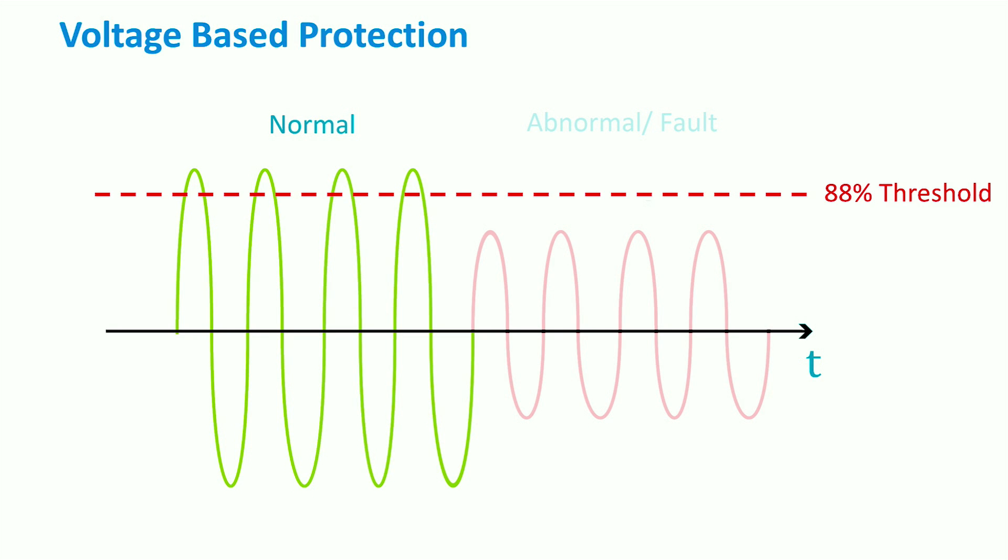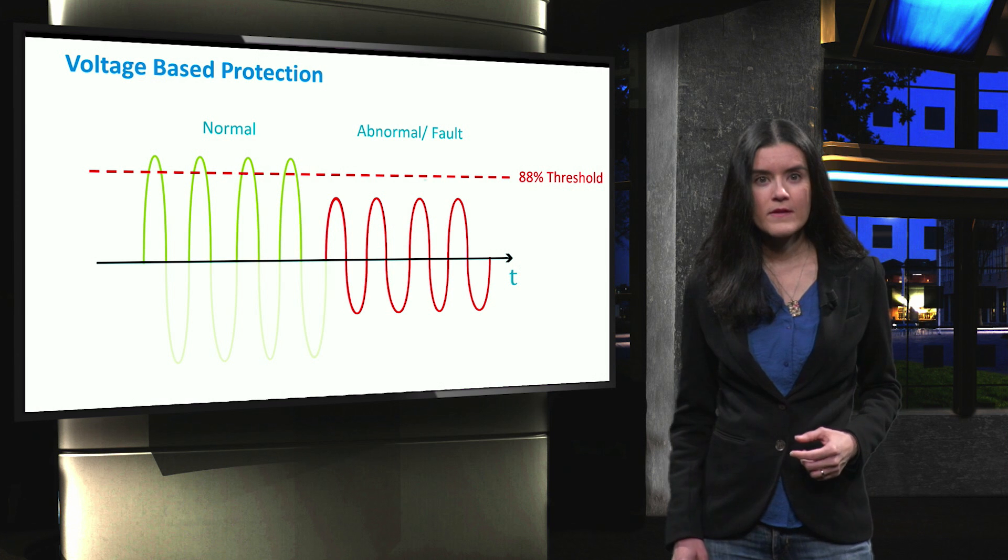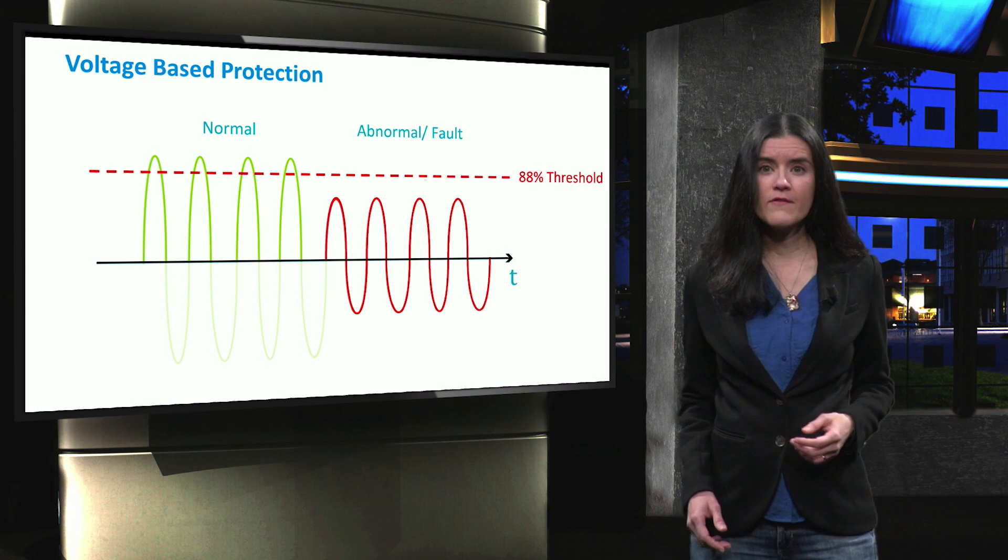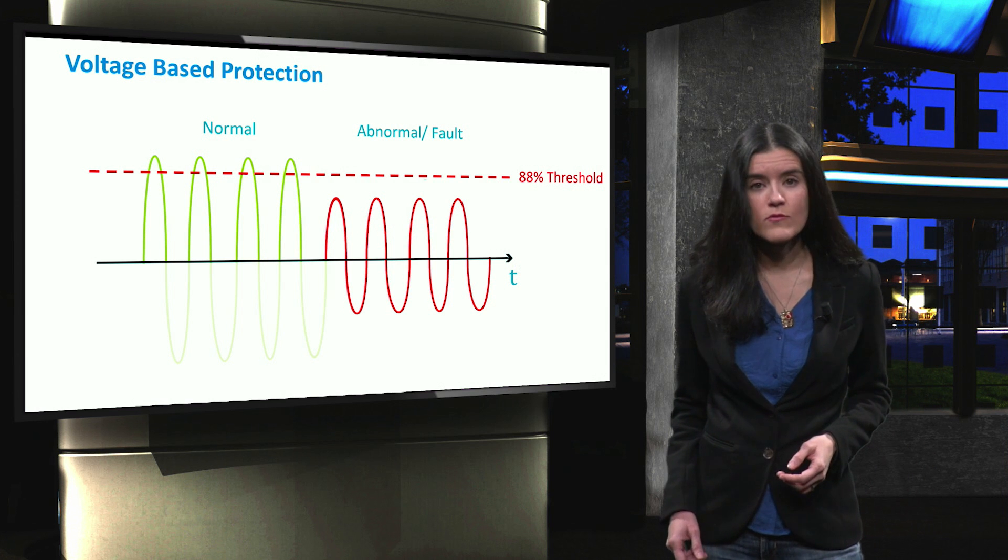If the value falls below 88%, this is seen as a fault close to the distributed generator. This leads to the intervention of the control system to limit the output current of the distributed generator. The main advantage of these methods is that they are unaffected by the current value or direction in the network.